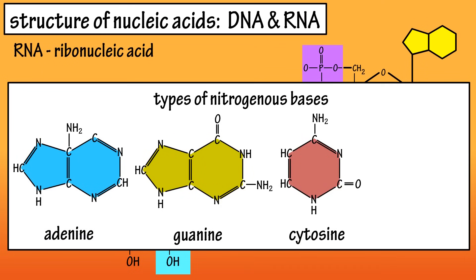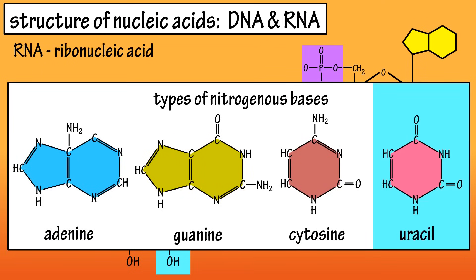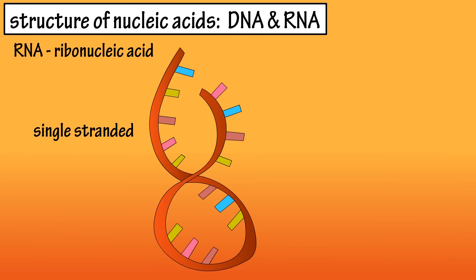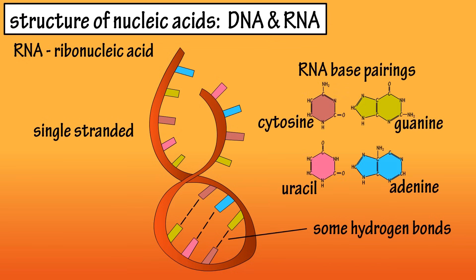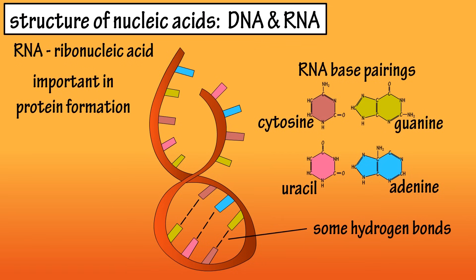But RNA does not contain thymine. Instead, it contains uracil, which is a single ring structure like thymine, making it a pyrimidine base. Most RNA molecules are single-stranded nucleic acids, and many times they form a folded, compacted structure with some hydrogen bonding taking place within the base pairs of the molecule. These pairings are the same as in DNA: cytosine and guanine are a base pair, and uracil takes the place of thymine and pairs with adenine. RNA is extremely important in the process of forming different proteins in the body, which will be covered in depth in a later video.